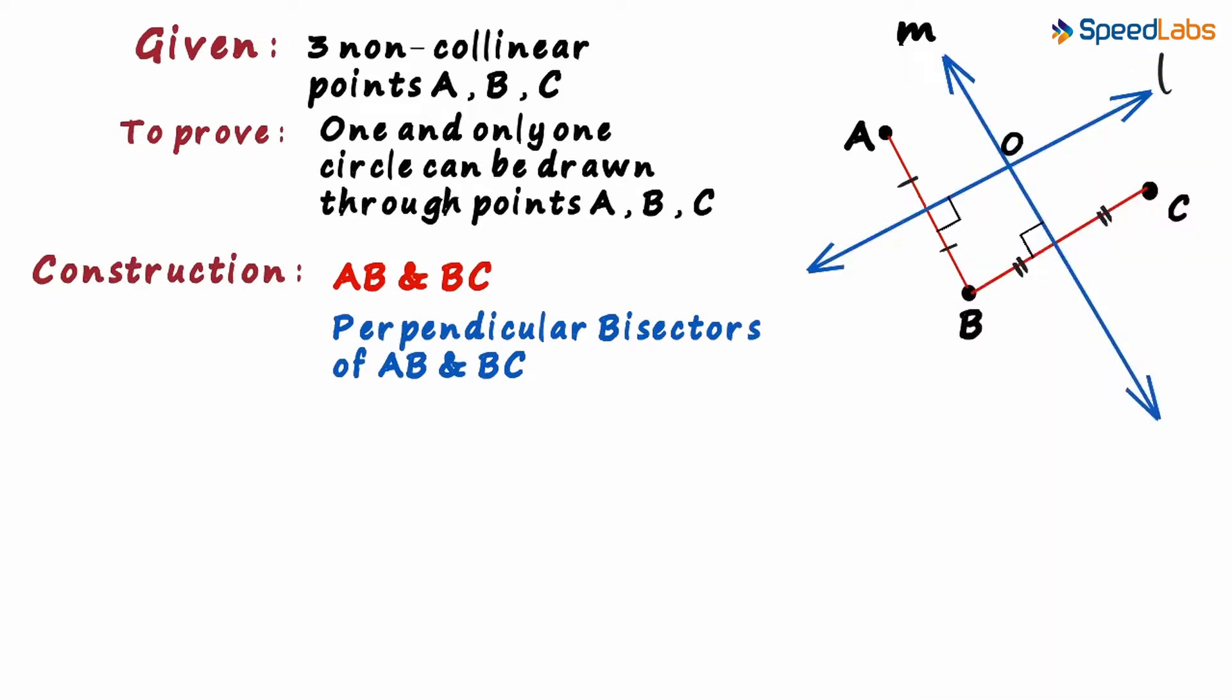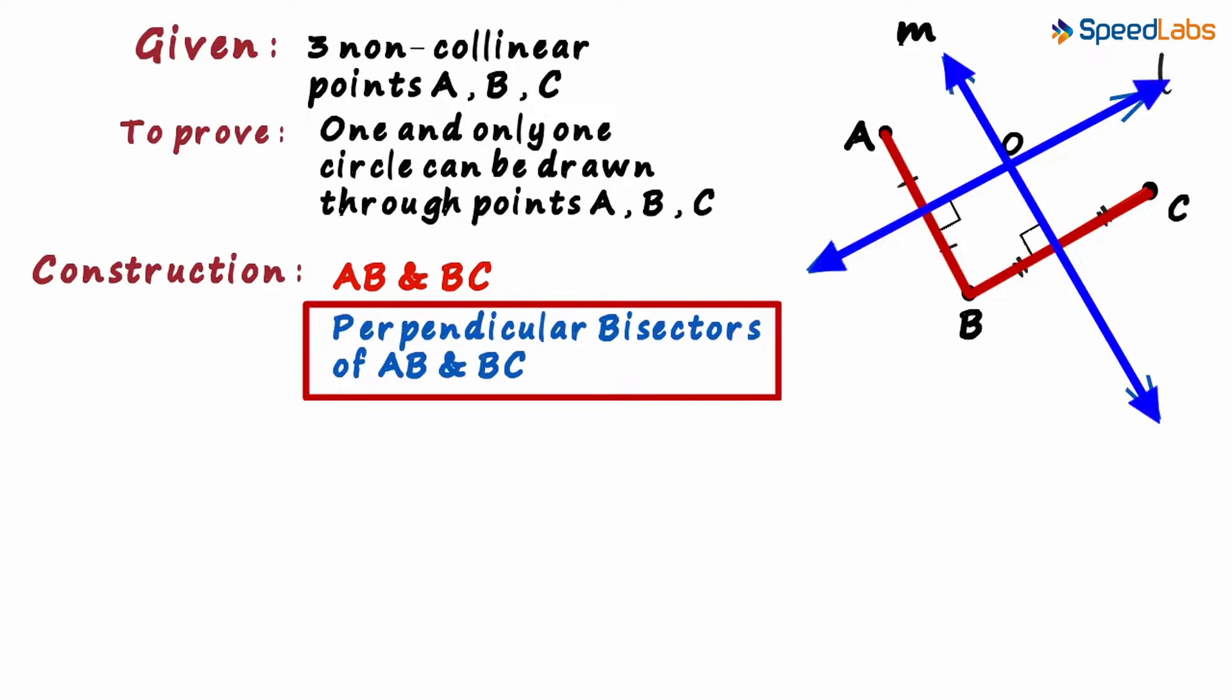First, we joined AB and BC and next we drew their perpendicular bisectors.